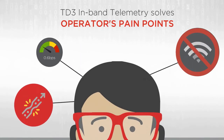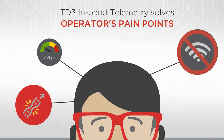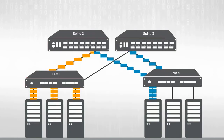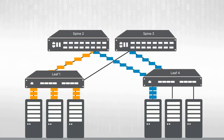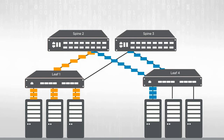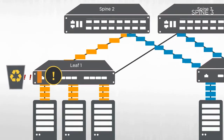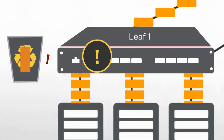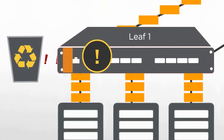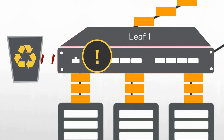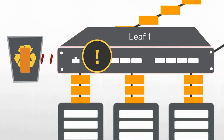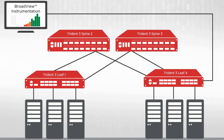Now let's see how Trident III's in-band telemetry solves operator pain points in data center networks using two example scenarios. The first scenario is congestion monitoring, including microbursts. Data center traffic is bursty by its very nature, and congestion often gets created in leaf or spine switches, resulting in dropped packets. Understanding the duration of the burst and the arrival rate in real time will help operators better optimize their network and provide higher service level guarantees.